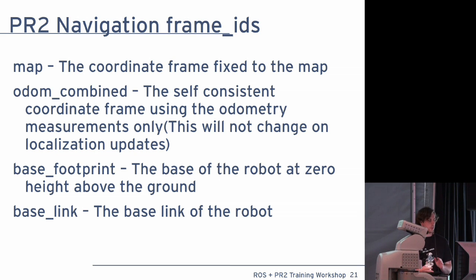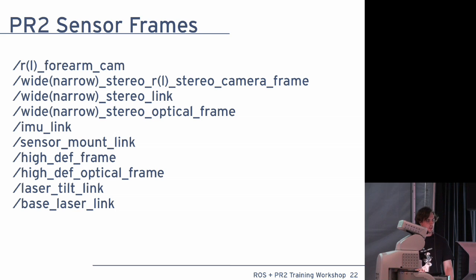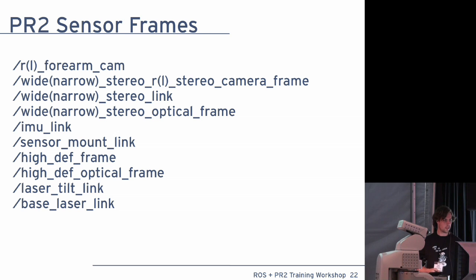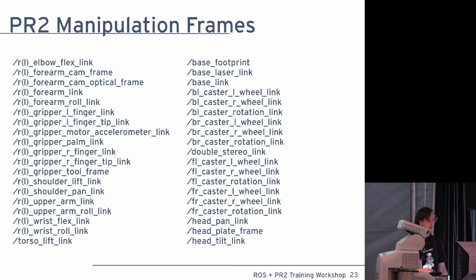For navigation, we use map, ODOM combined, base footprint, and base link most of the time. The sensor frames are here — you have R and L of most things, or wide or narrow. And then these are all the manipulation frames with right and left of almost everything. Full documentation is on the wiki.